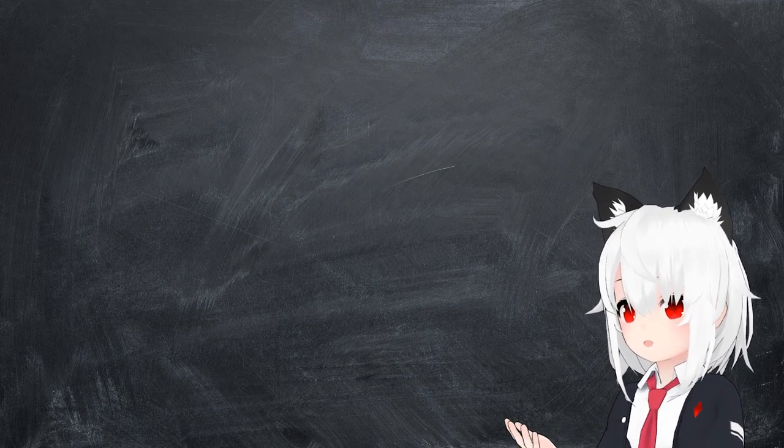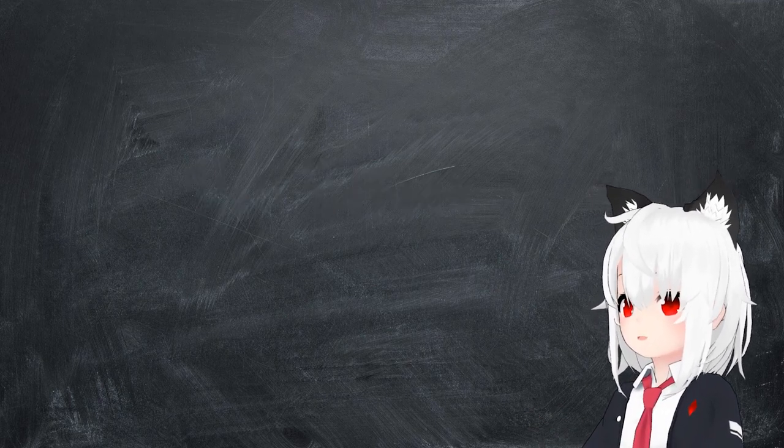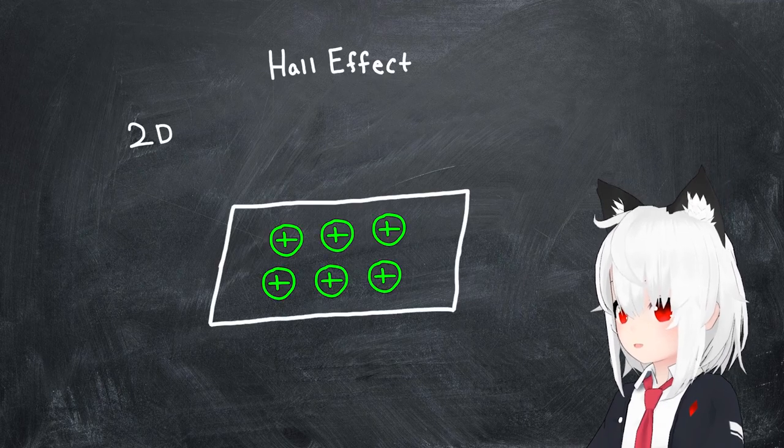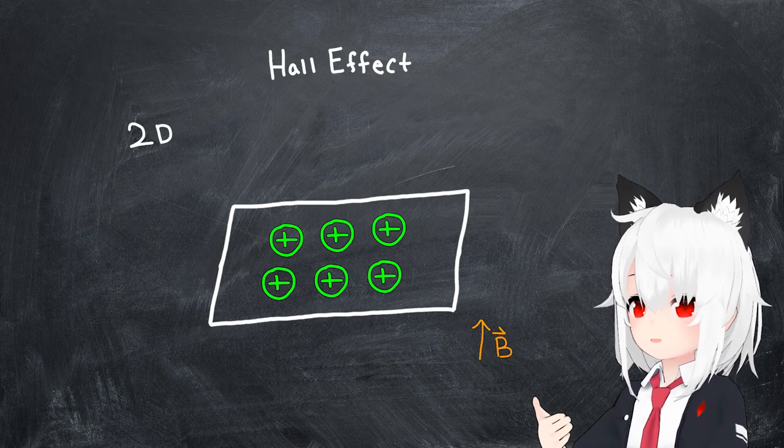This anomalous Hall effect is a close cousin of the related Hall effect, and this is an effect defined with respect to a two-dimensional system of electrically charged particles exposed to a perpendicular magnetic field.